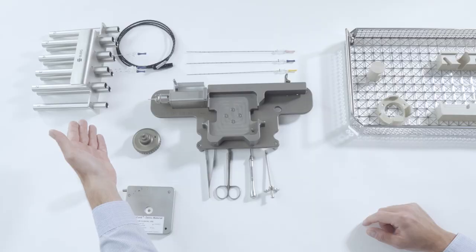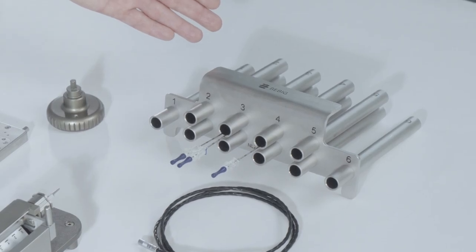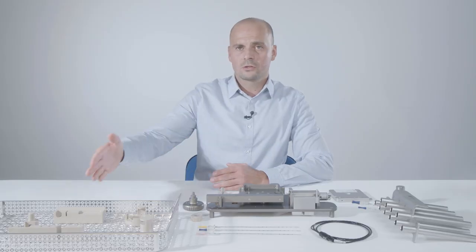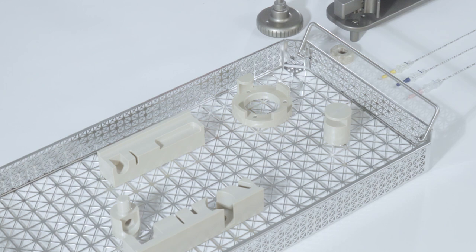The isocord needle magazine is used for temporary storage of loaded implantation needles. The sterilization tray holds the needle loading station and its accessories during the sterilization process.